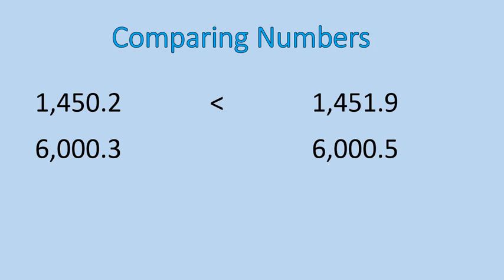All right. 6,000.3 and 6,000.5. The number that we're looking at is the tenth column, the number one place on the left of the decimal, on the right of the decimal. And in this case, five is greater than three. So we'd say point three is less than point five.